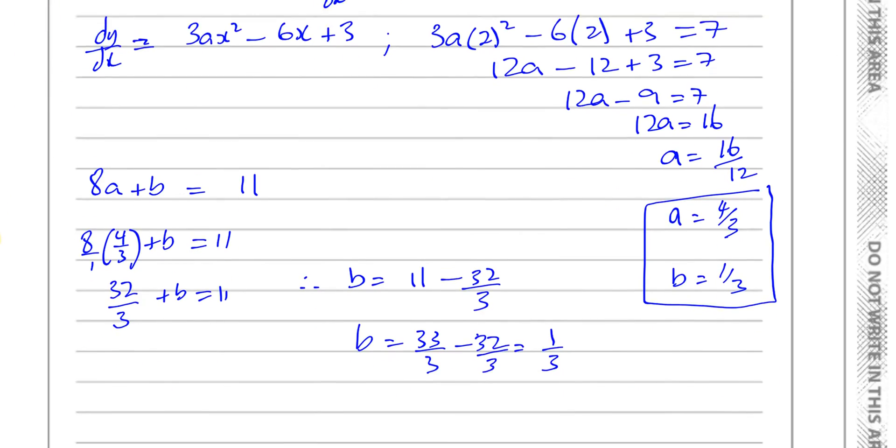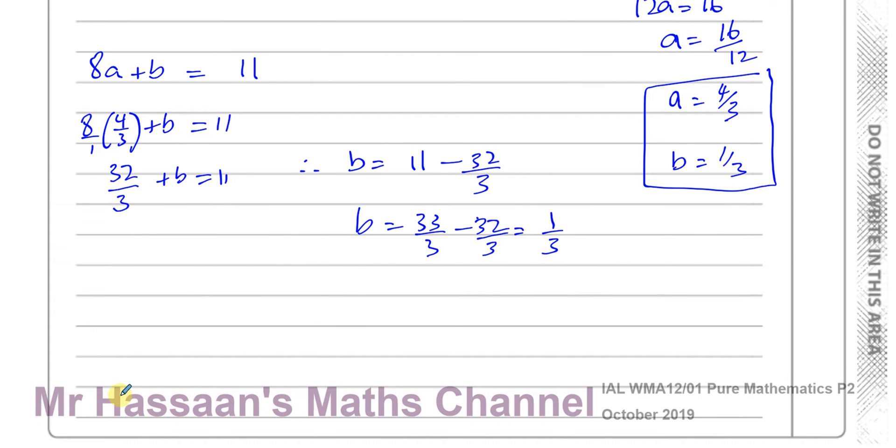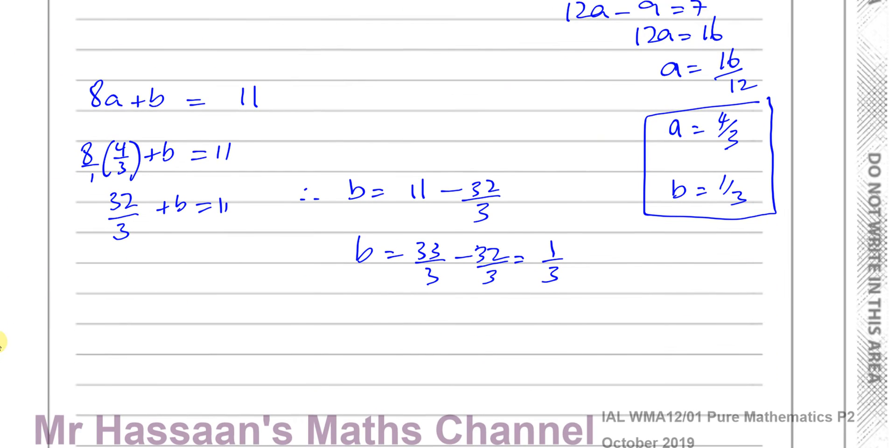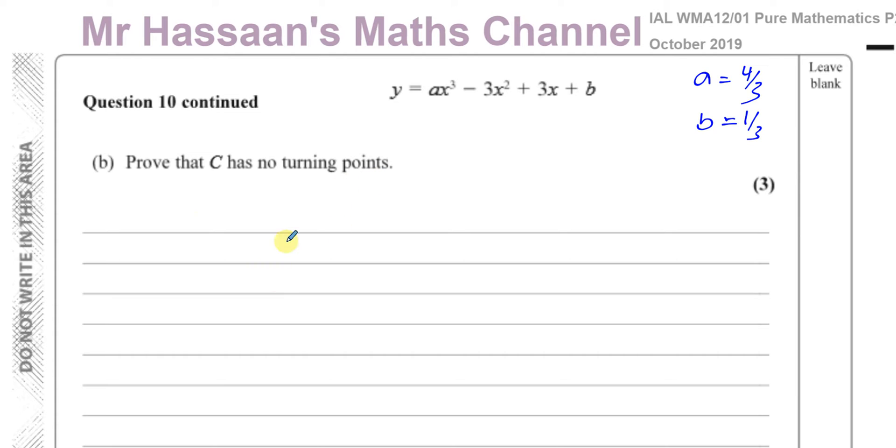That's part A. Now on to part B. It says prove that C has no turning points. So we had A equals 4 over 3 and B equals 1 over 3. Now, if it has no turning points, what tells us about turning points? What's special about the turning points of a curve? What's special about the turning points of a curve is that the gradient at the turning point is equal to 0.